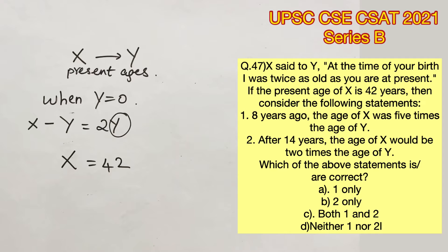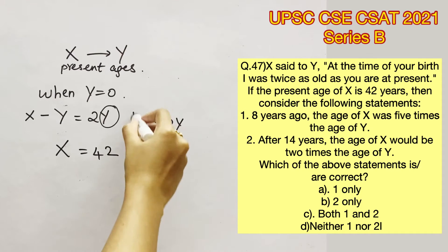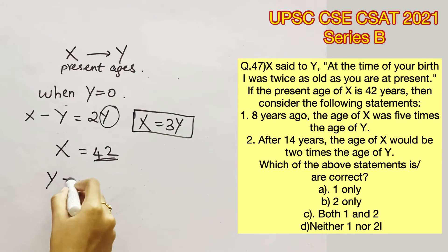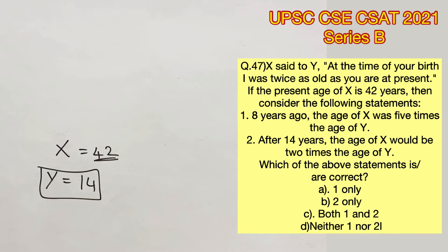So solving this equation, we will get X equals 3Y. Substituting the value of X, Y equals 42 by 3, which is 14. Now we have the present ages of both X and Y.